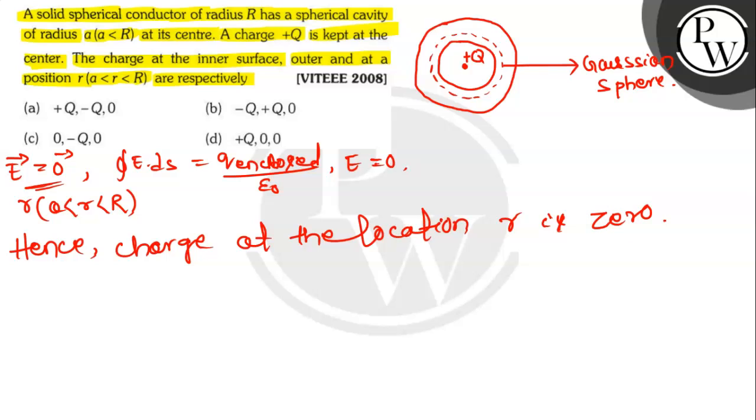The charge inside the cavity is plus Q, and the inner surface of the conductor has a charge of minus Q. Initially, the charge on the conductor is 0. Hence, by principle of conservation of charge,